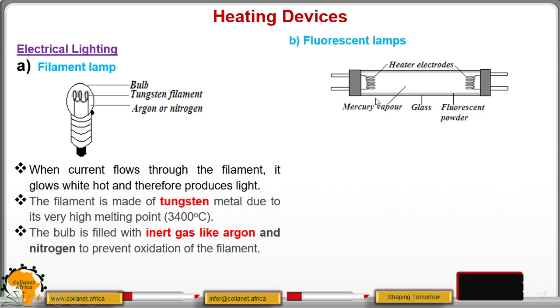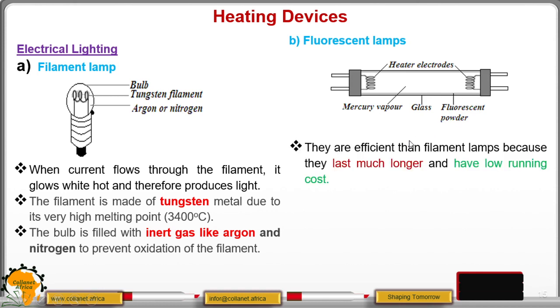Then outside it's covered with glass. And then at the edges here, it is having a fluorescent powder. Now these ones, they are more efficient than this lamp because, one, they can last longer and they have low running cost. Therefore, they become efficient than the bulb or what we call the filament lamp.